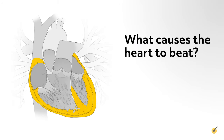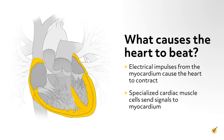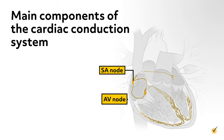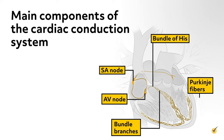You may be wondering what causes the heart to beat. Electrical impulses from the heart muscle, the myocardium, cause the heart to beat, or contract. Known as the cardiac conduction system, a group of specialized cardiac muscle cells in the walls of the heart sends signals to the myocardium, causing it to contract. The main components of the cardiac conduction system are the SA node, AV node, bundle of HIS, bundle branches, and Purkinje fibers.